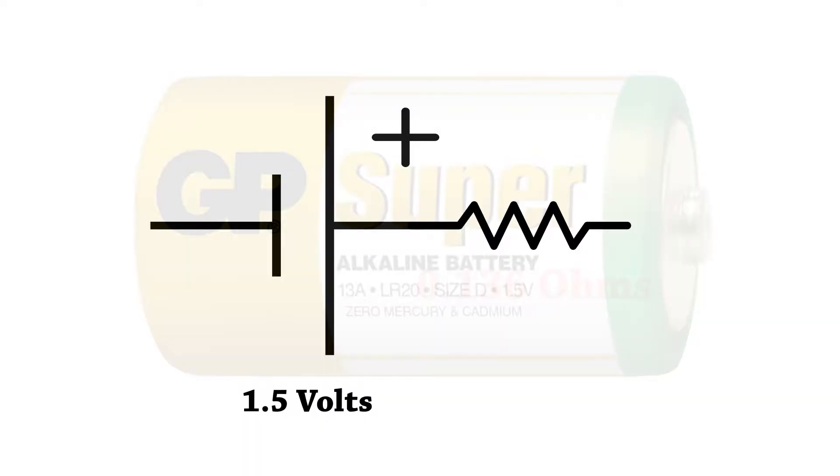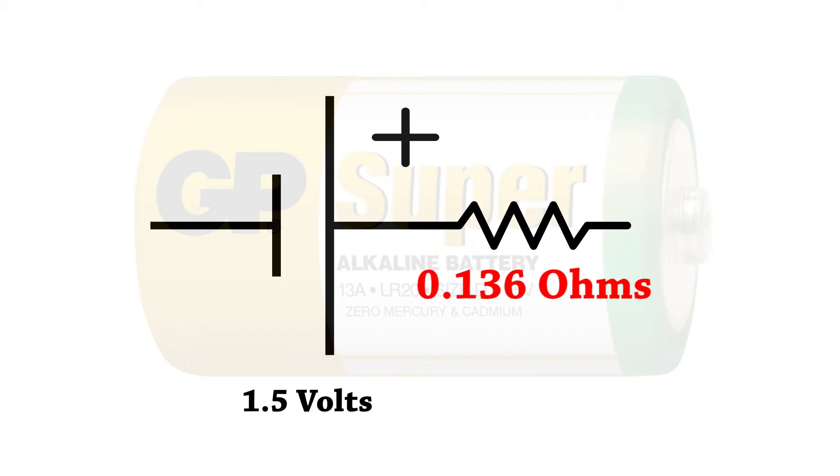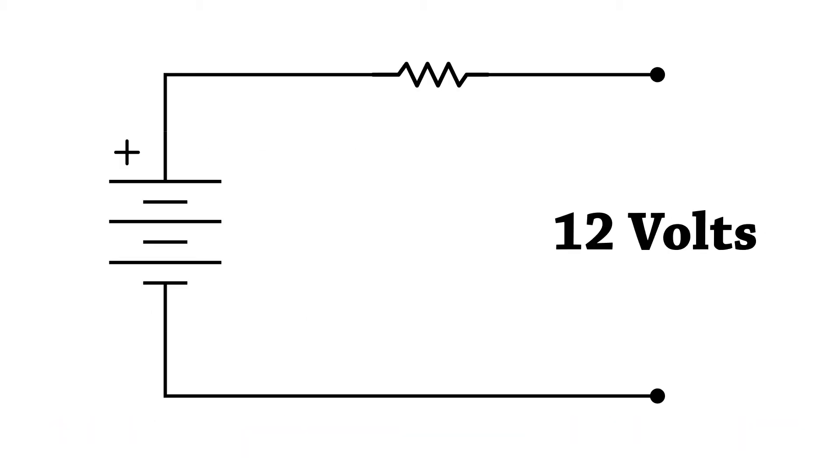So let's draw a model of what this real battery really looks like. It's a voltage source of 1.5 volts in series with a 136 milliohm resistor. Now looking at our 8 cell stack, we end up with 8 voltage sources in series with 8 resistances. We can simplify this to a single battery of 12 volts in series with a single resistor of 1.088 ohms. All we did is just add up the resistance and the voltage because it's all in series.